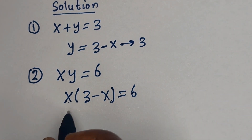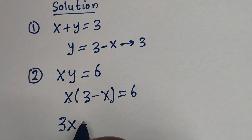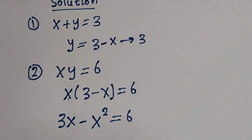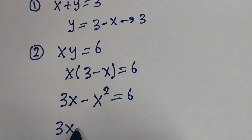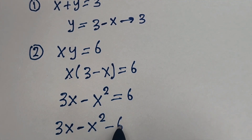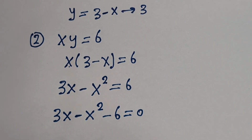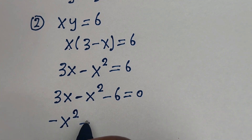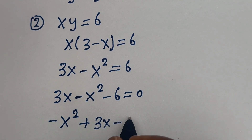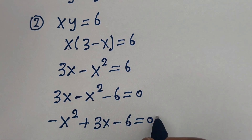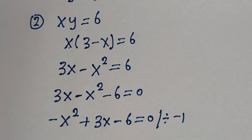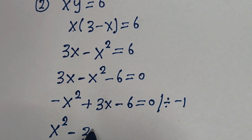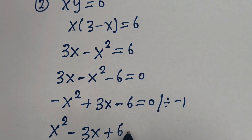Now let us open the bracket: S multiplied by 3 is 3S, minus S multiplied by S is S squared, so 3S minus S squared equals 6. Rearranging, this gives minus S squared plus 3S minus 6 is equal to 0. Now let us divide the whole equation by minus 1, giving S squared minus 3S plus 6 is equal to 0.